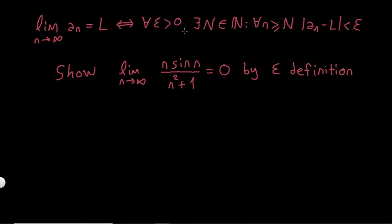For each epsilon, there should be at least one capital N, which is a positive integer, such that for all n greater than or equal to capital N, we should have |aₙ minus l| less than epsilon.